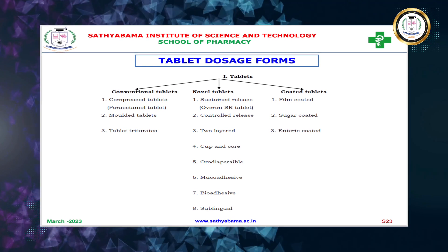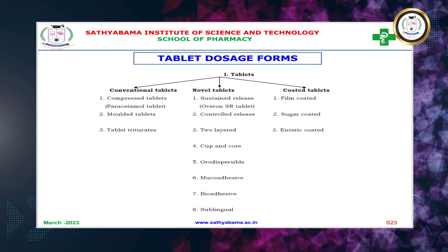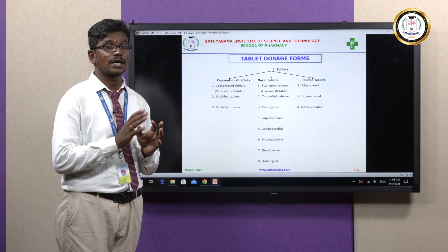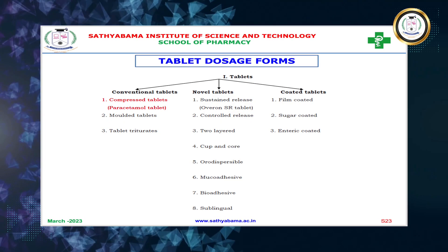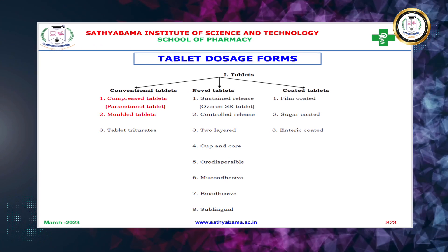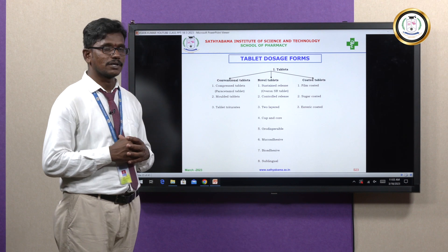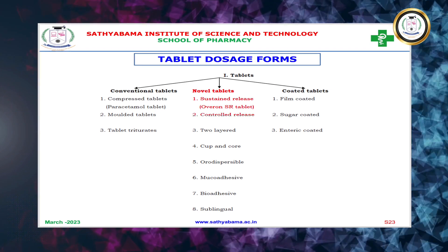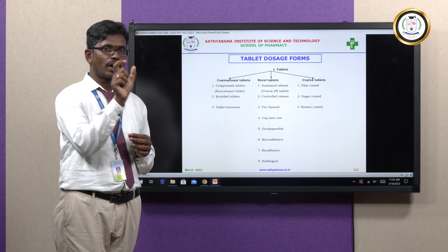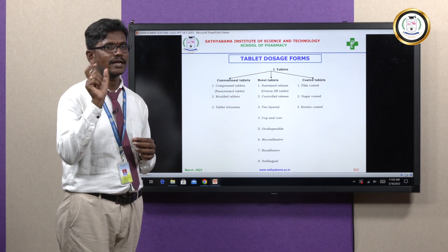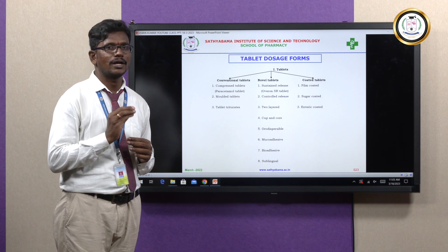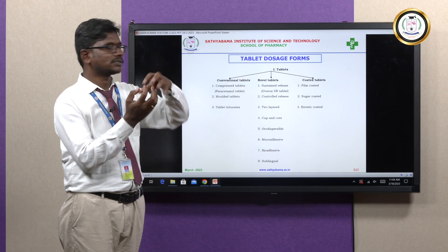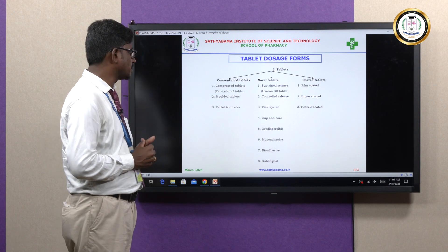For tablet dosage forms, there are three different types: conventional, novel, and coated tablets. Conventional tablets are the normal compressed tablets we use — examples include paracetamol tablets, Calpol, and Dolo. Molded tablets and tablet triturates are also conventional tablets. Novel tablets include sustained release tablets, controlled release tablets, two-layer tablets — where one layer contains one drug and the second layer contains another drug — and cup-and-core tablets, where the drug is placed in the core.